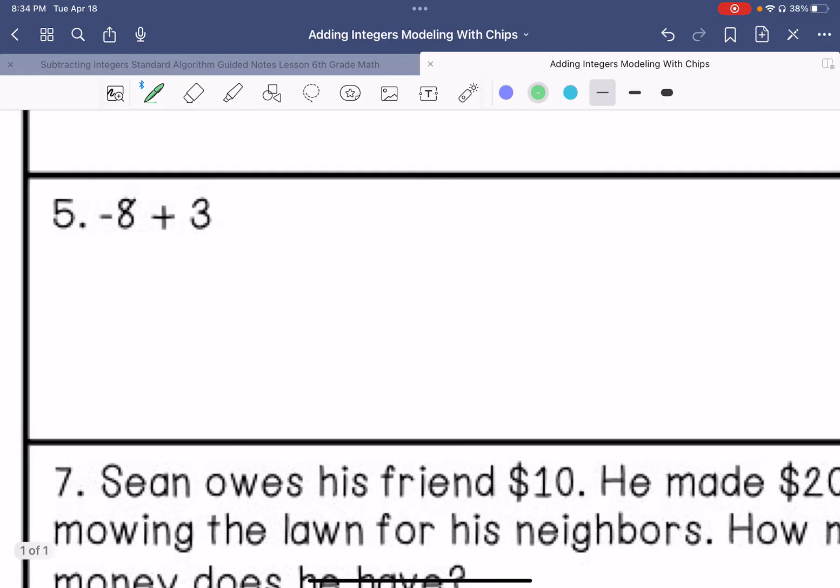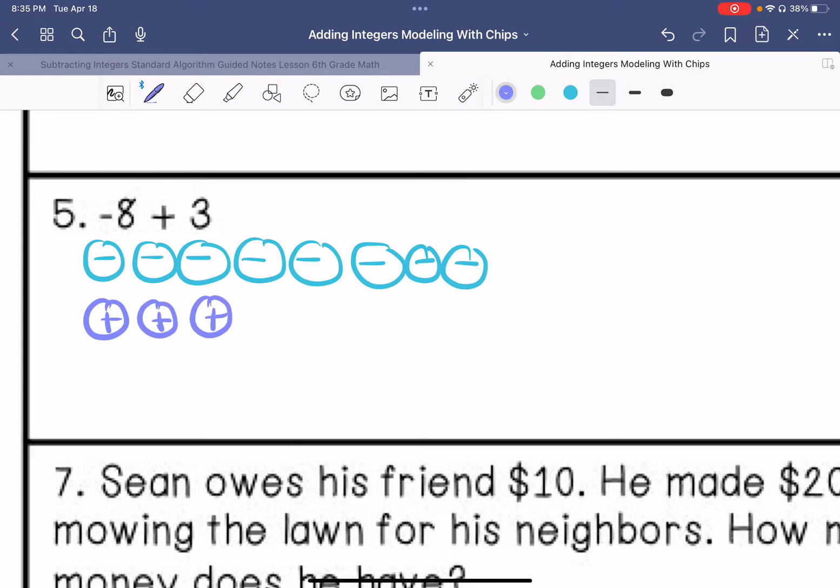Number five. Eight negatives. Three positives. And we can make three zero pairs. And what we have left is five negatives, so that's going to be negative five.